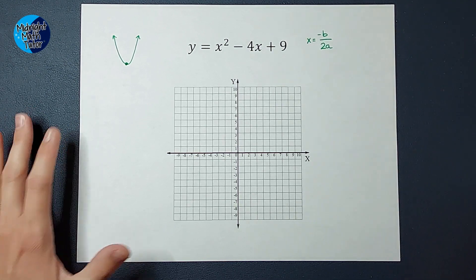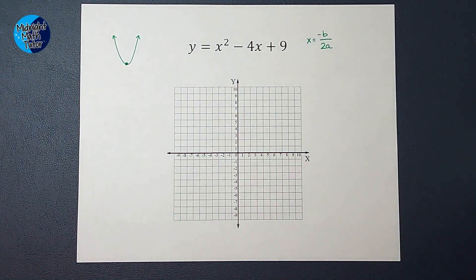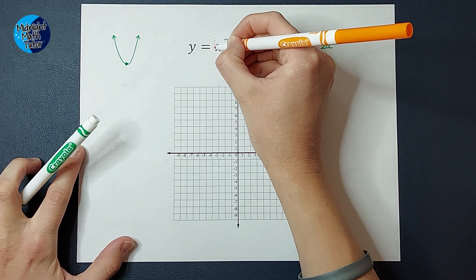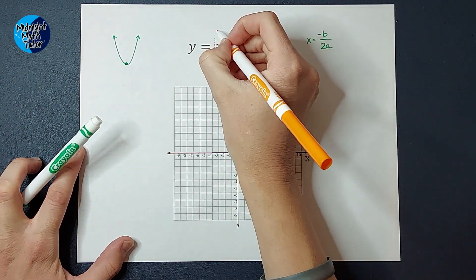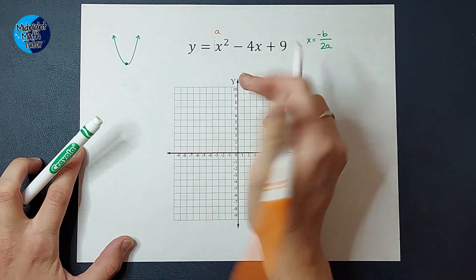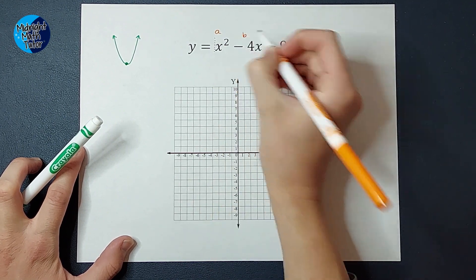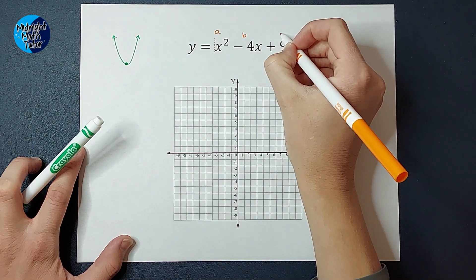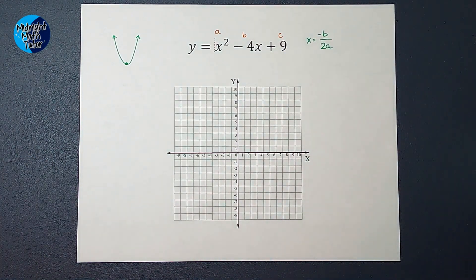Now you're like, where are these a's and b's coming from, right? So they are coming from, when we are in standard form, the number in front of our x squared, which in this case is a 1, is a. The number in front of our x is b, and the number being added or subtracted on the back is 9. So that's where the a's and b's are coming from.